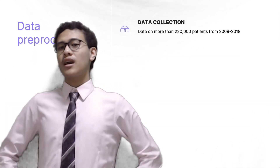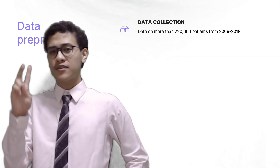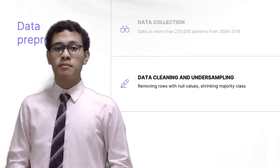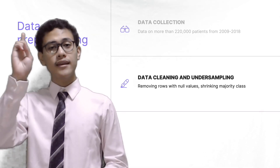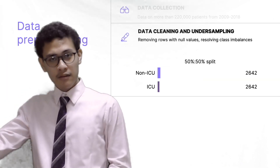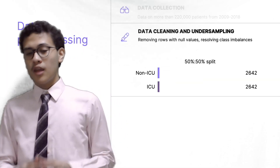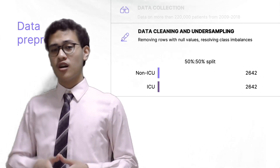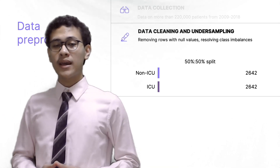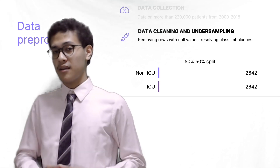Now, how do we do this? Well, first of all, we need data. So we use data from over 200,000 patients. This was followed up with data cleaning and undersampling, which we did by removing all null and inaccurate values from the data, and then balanced out the class distributions. It's important that our class distributions are roughly equal in order to make the model make accurate predictions without bias towards the majority.